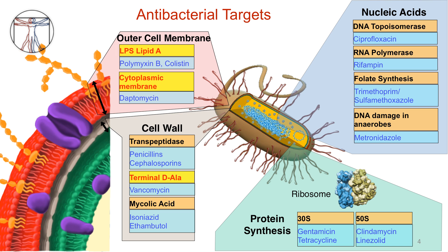Third, the polymyxins, denoted here by lipopolysaccharide or LPS lipid-A targeted antibiotics, are represented by polymyxin B and colistin.